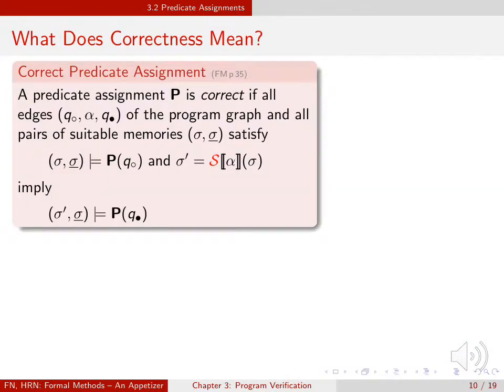When is such a predicate assignment correct? For this we need to inspect each edge in the program graph. If a concrete memory and virtual memory satisfy the predicate at the source node, then the updated concrete memory and the unchanged virtual memory must satisfy the predicate at the target node.